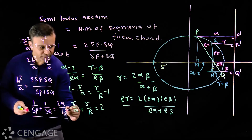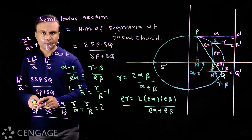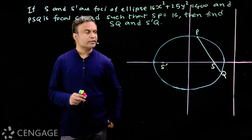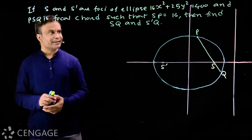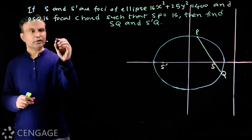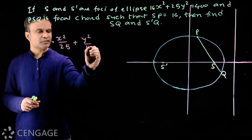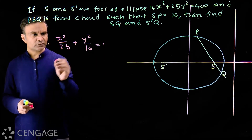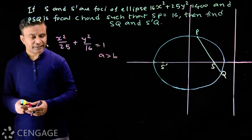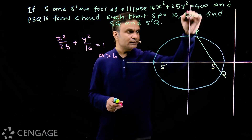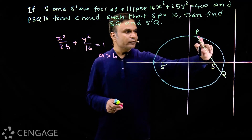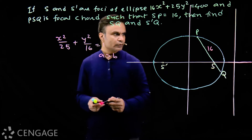Let's try one question using this property. Given: S and S' are the foci of the ellipse 16x² + 25y² = 400, and PSQ is a focal chord such that SP = 16. Find lengths SQ and S'Q. Dividing both sides by 400 gives x²/25 + y²/16 = 1. So a = 5 and b = 4, with a > b, meaning the major axis is the x-axis. PSQ is the focal chord through focus S, with SP = 16.